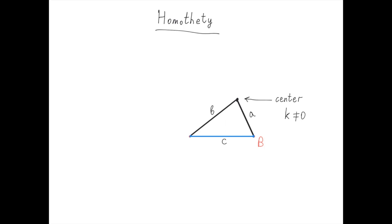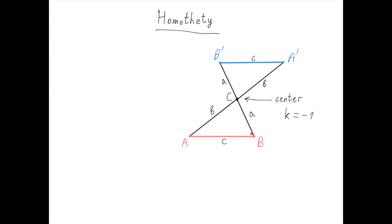But what happens for negative values of k? For example, for k equals negative 1, let's see what happens. When k is 1, b is here. When k is 0, b is here. And so, when k is negative 1, it makes sense that b goes right here. The point b goes to b prime, the point a goes to a prime, such that this length equals this length equals a, and this length equals this length equals b, and also this length equals this length equals c. Essentially, we took every point and reflected it with respect to the center of homothety.